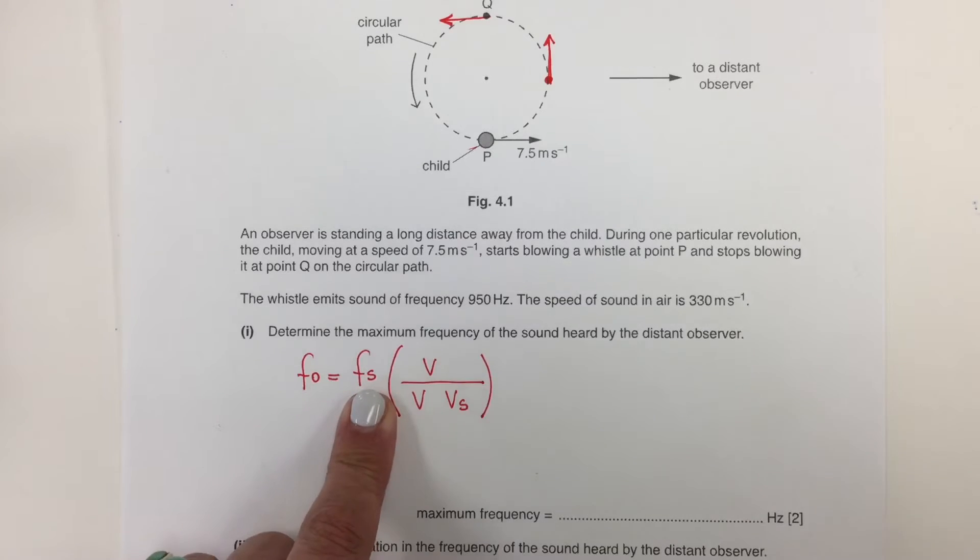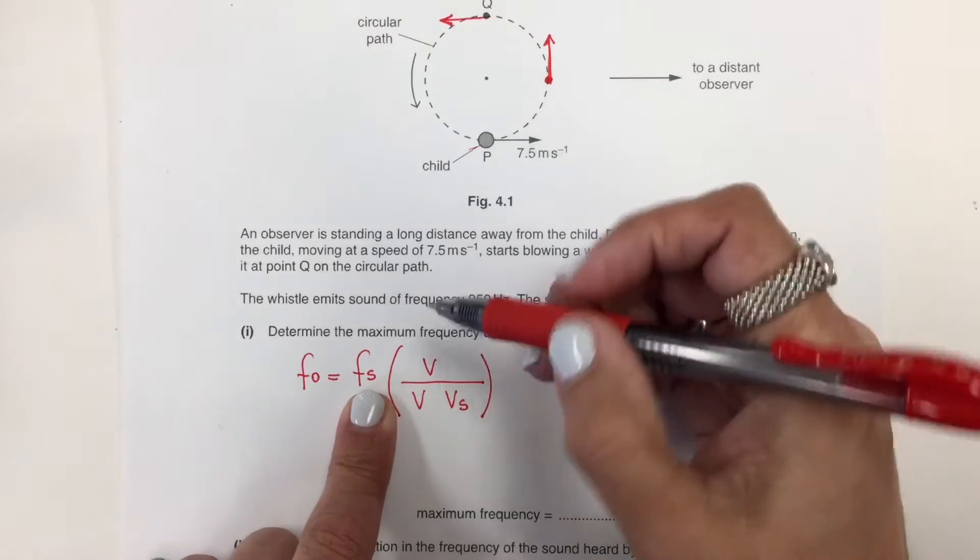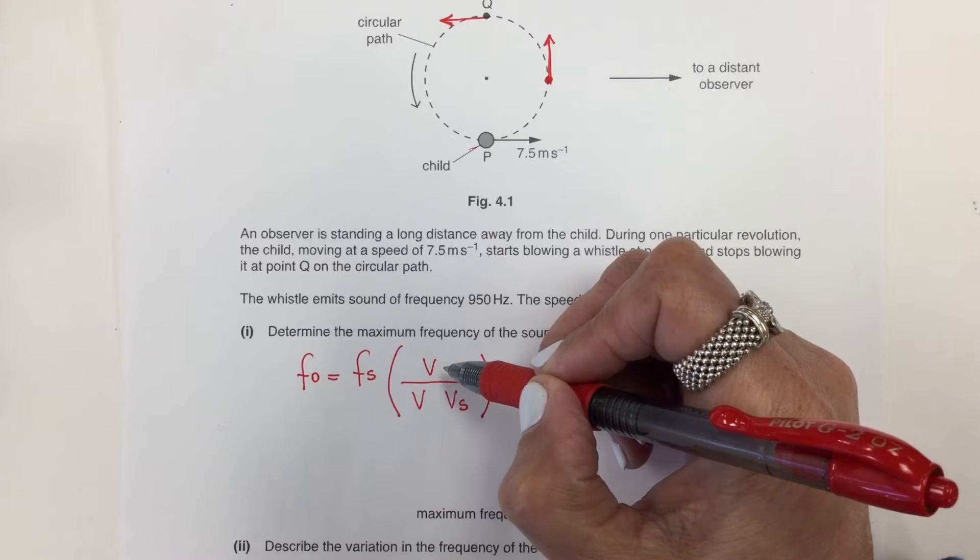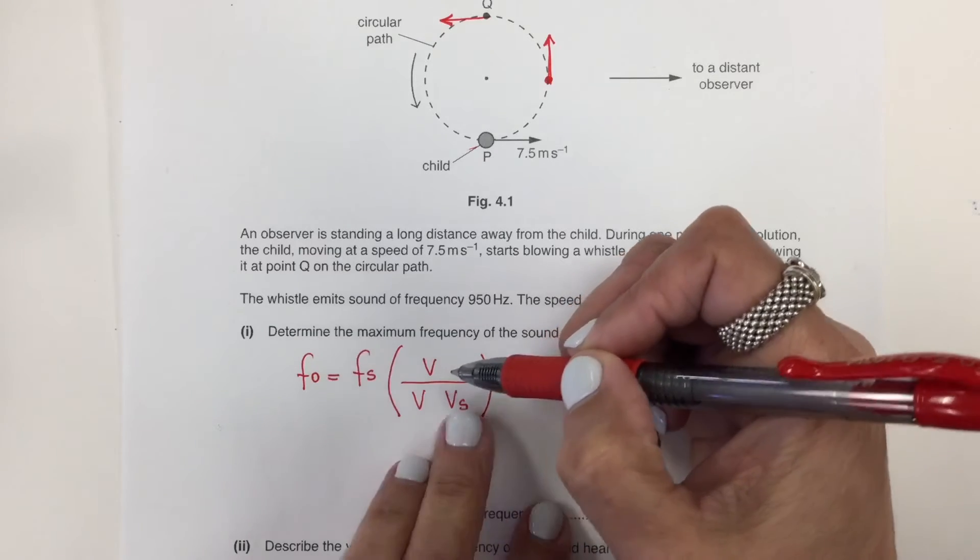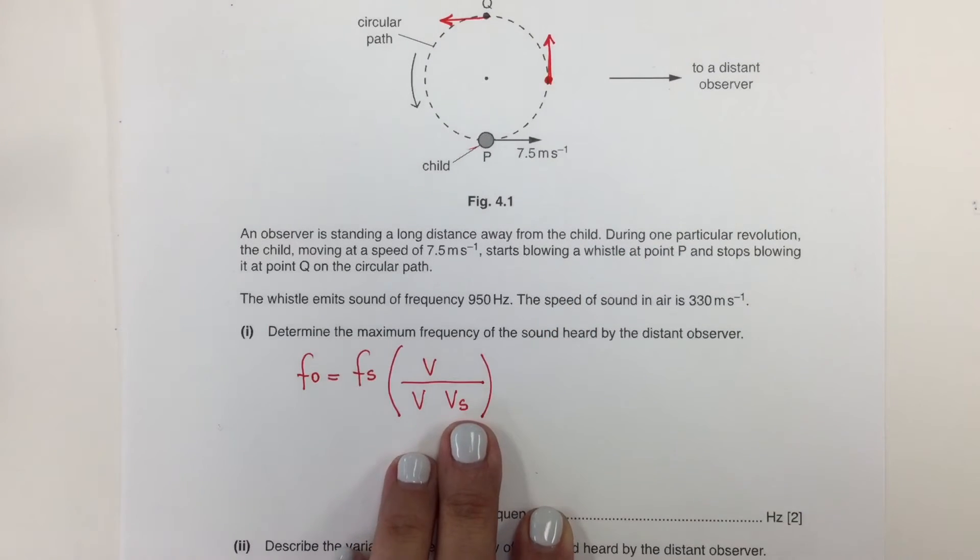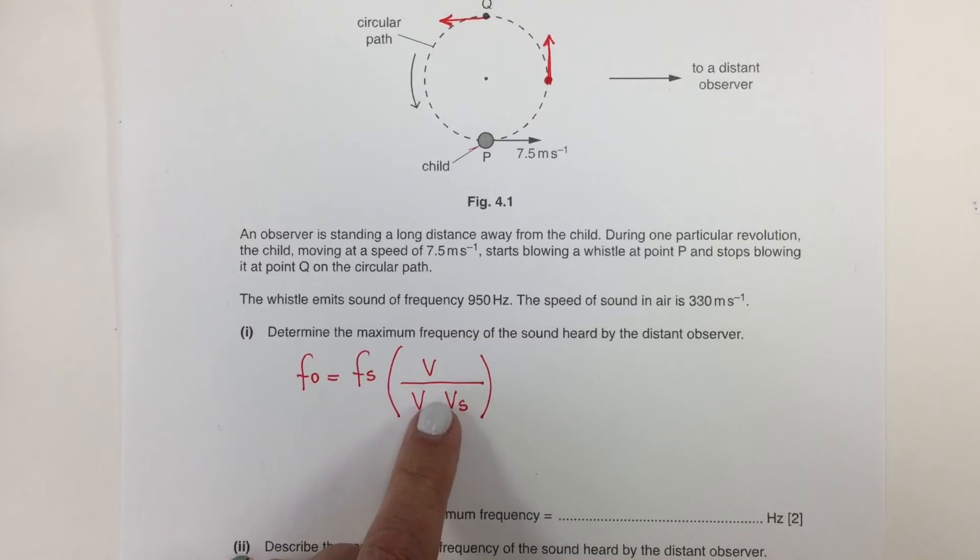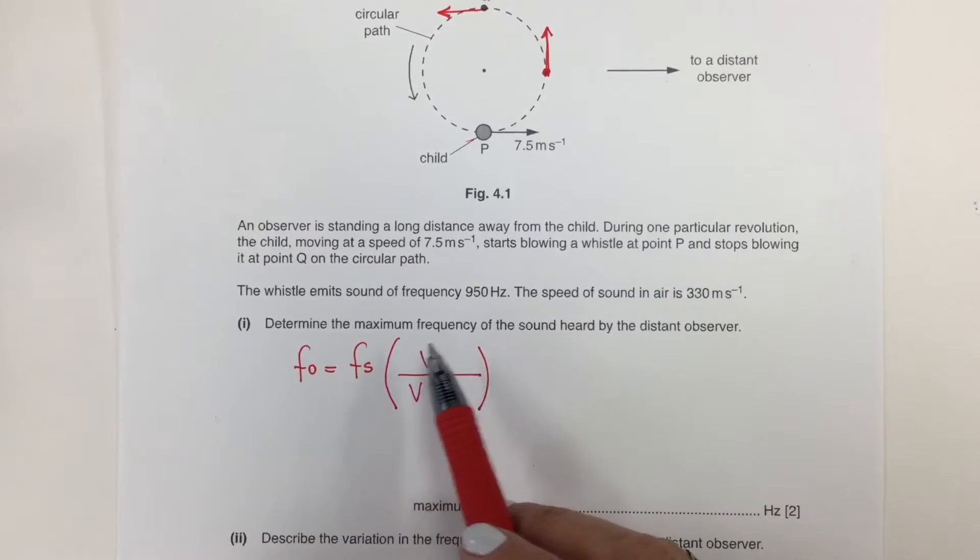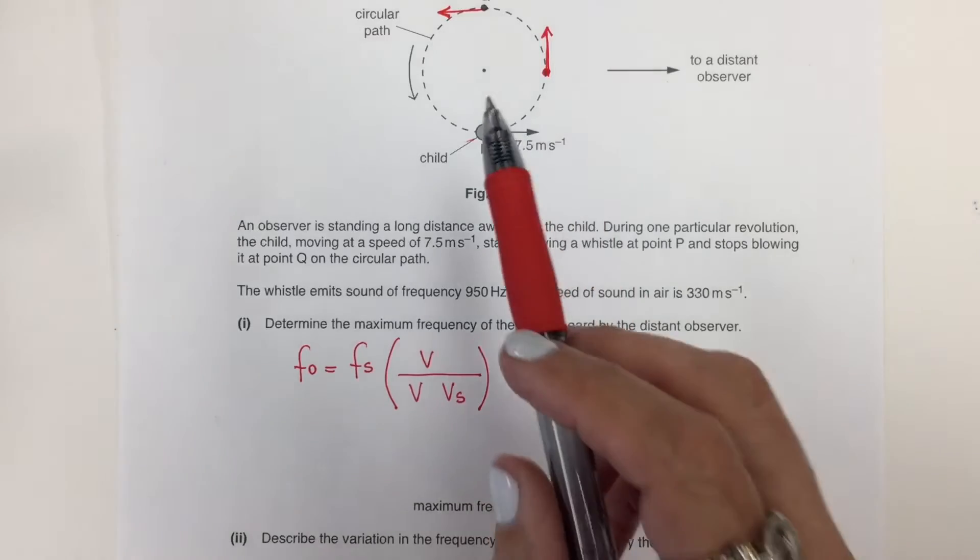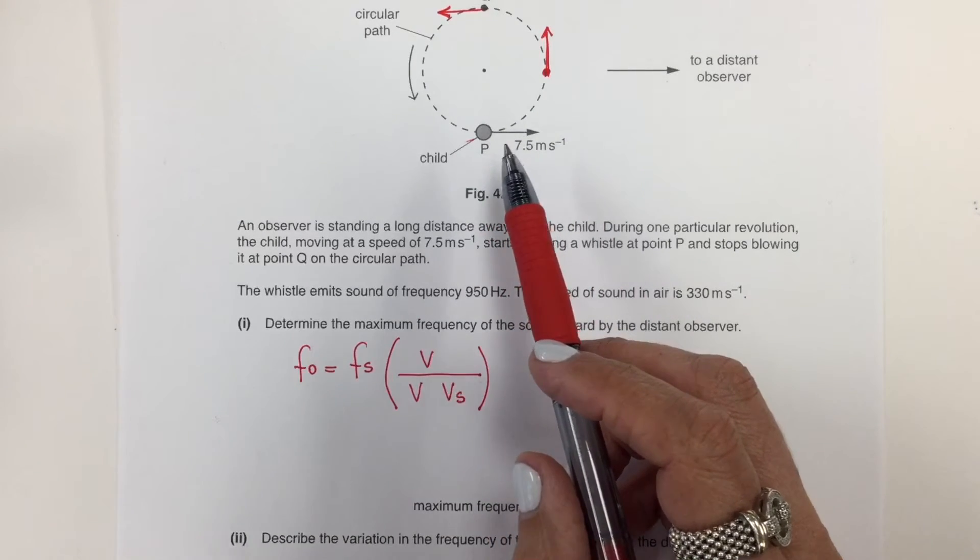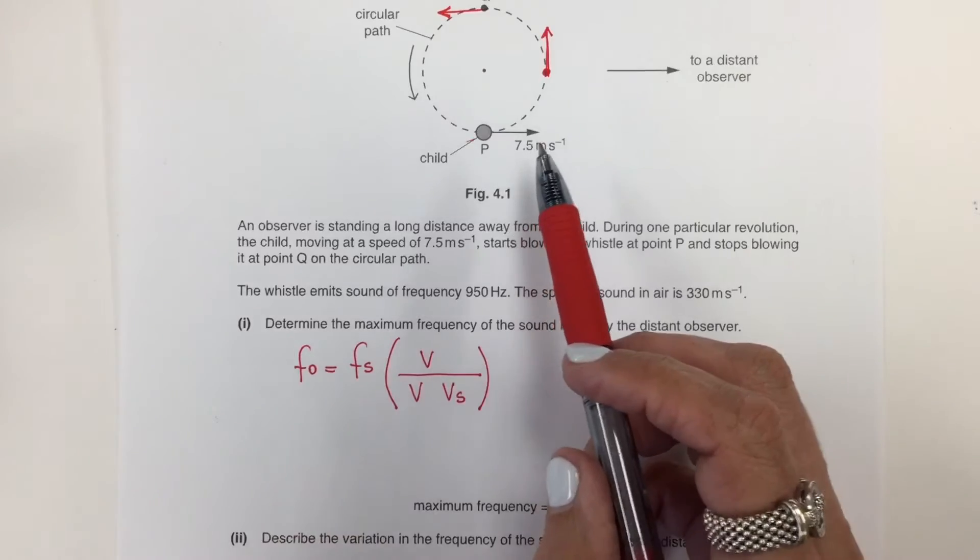The Doppler effect formula relates the frequency of the observer, the frequency of the sound source, the speed of sound in the air, and the speed of the sound source. The only thing that is missing in this formula is the plus or minus sign for the speed of the sound source.